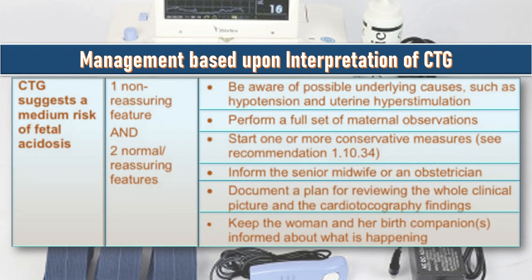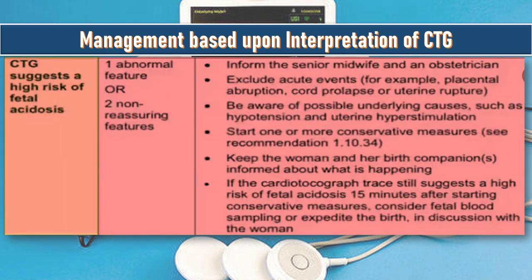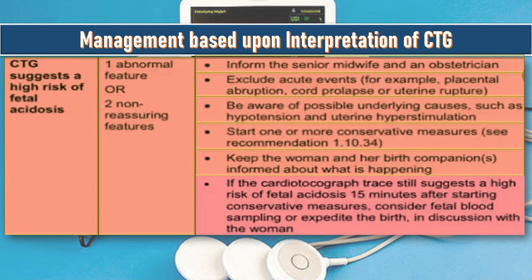When CTG suggests a high risk of fetal acidosis — one abnormal feature or two non-reassuring features — inform the senior midwife or an obstetrician, exclude acute events such as placental abruption, cord prolapse or uterine rupture, and be aware of possible underlying causes such as hypertension and uterine hyperstimulation. Start one or more conservative measures. If the CTG trace still suggests high risk 15 minutes after starting conservative measures, consider fetal blood sampling or expedite the delivery.